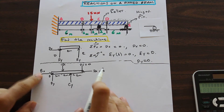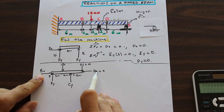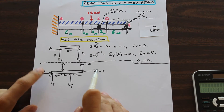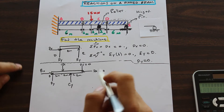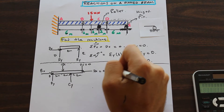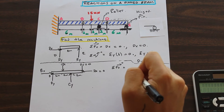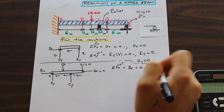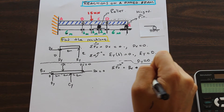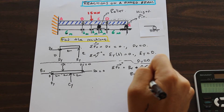If we didn't know that DX was zero, when we took the summation of forces in the X direction, we would have BX minus DX equals zero — one equation with two unknowns, and no way to solve it. That's why we needed to find DX equal to zero first. Now taking the summation of forces in X: BX minus DX equals zero, and since DX is zero, BX is equal to zero.